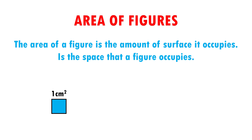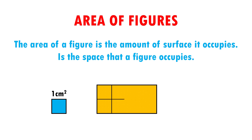As in this example, imagine that I have this rectangle and I am going to see how many 1 cm squares per side will fit. And done! It can fit 8. This means that the area of this rectangle is 8 cm squared.